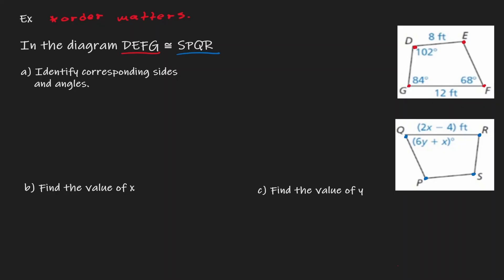Notice the way that we name them — we name them due to the vertices of the object. So here we are saying that these two objects are congruent, because notice that we're using the congruency symbol.